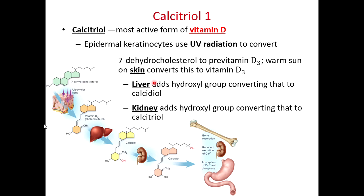Calcitriol — that most active form of vitamin D — is formed when ultraviolet radiation impacts the skin, converting precursor forms of vitamin D. These precursors are sent to the liver where a hydroxyl group is added, then to the kidney where another hydroxyl group is added, producing calcitriol. Calcitriol also stimulates osteoblasts to signal production of more osteoclasts via RANKL, so that more compact bone tissue is dissolved and calcium is dumped into the bloodstream.